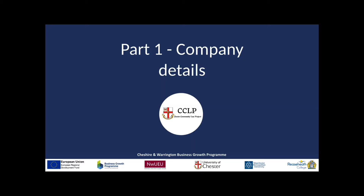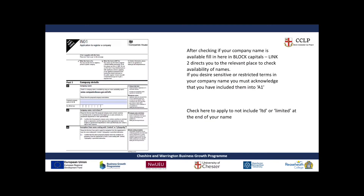Part one is all about company details. As with any government form, it's essential that you fill it out in block capitals for ease of processing. Part A1, the first part of the form, is your proposed company name. Your company name must comply with government regulations and must be available — it cannot be the same as another limited company's name. You can check whether a name is available by following the link in A1 and in the second link below.